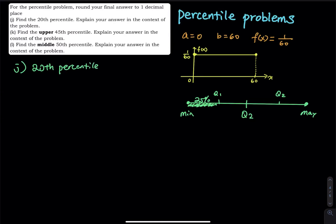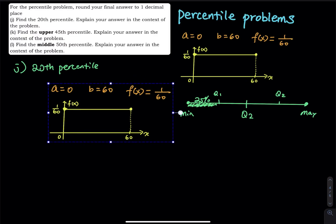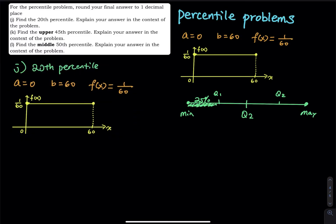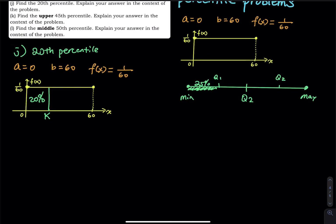First we need a graph. The 20th percentile means you cut 20 percent of the probability on the left-hand side, so from zero all the way to some point K on the left you have 20 percent. In a regular probability problem I give you the lower and upper cutoff and you give me the area, but in a percentile problem we reverse the process — I give you the probability and you tell me where to cut. To find the area you use maximum minus minimum times the height of the rectangle, which is the PDF, and that equals 20 percent. You have to solve for K.